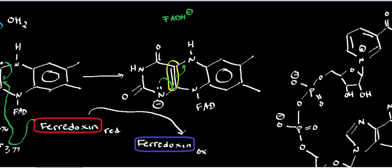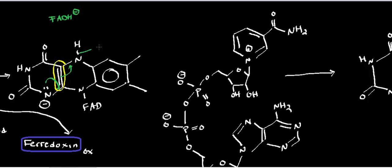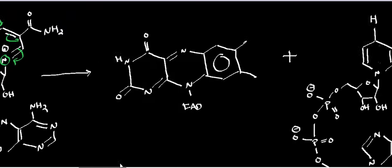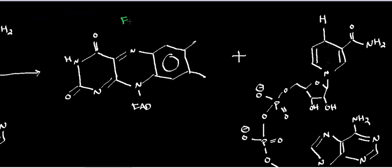The hydride comes over and attacks the top carbon of NADP+. This causes a double bond rearrangement where the nitrogen acts as an electron sink. Ultimately, this regenerates FAD in the fully oxidized form, and of course we also get NADPH — the reduced version of the coenzyme. This is the key structure that is characteristic of NADPH.